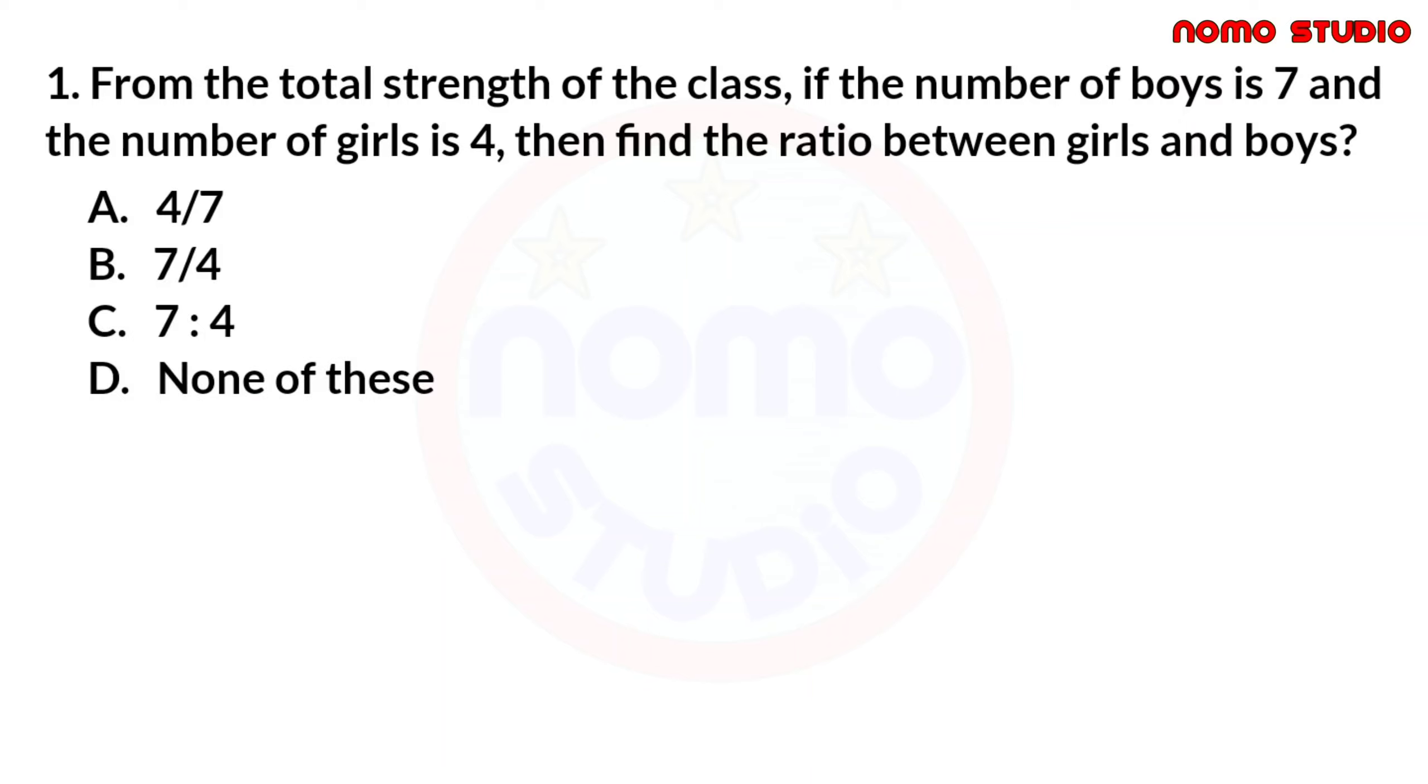Choose the letter that corresponds to your answer and feel free to pause the video. Since we are asked to find the ratio between the number of boys and girls in the class, the correct answer is letter A. It's 4 over 7.